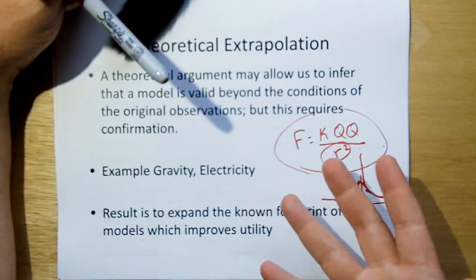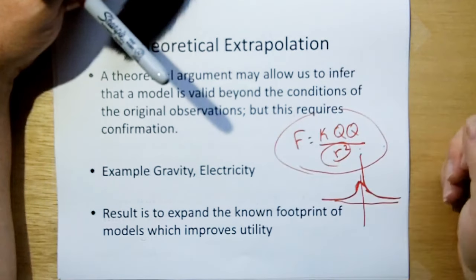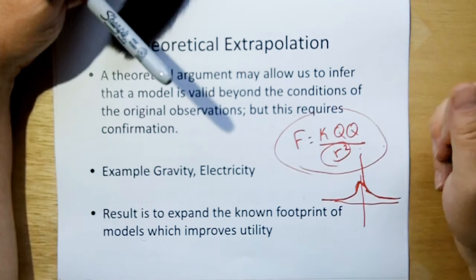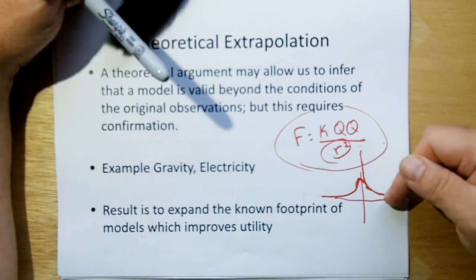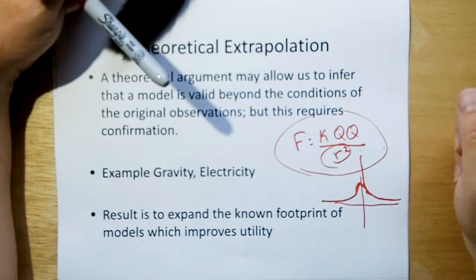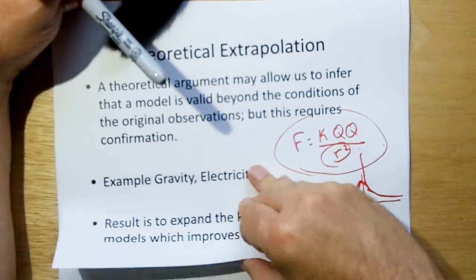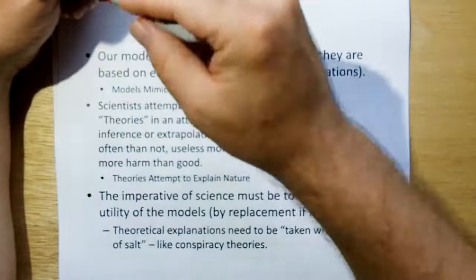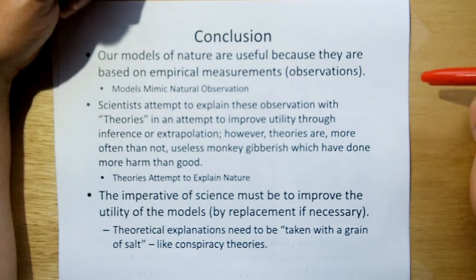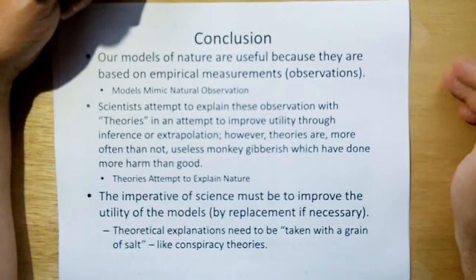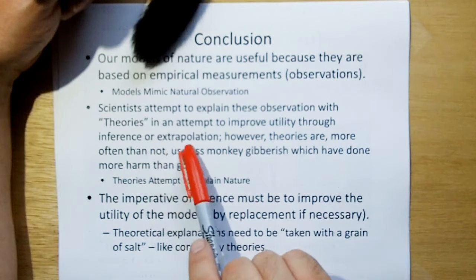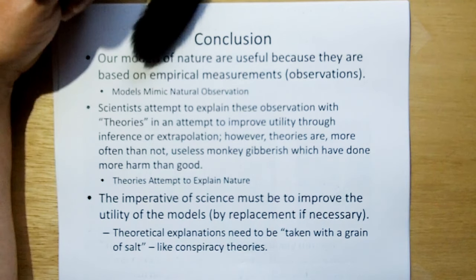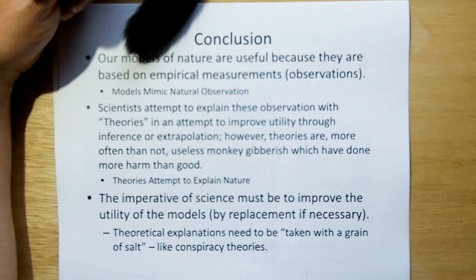So theoretical extrapolation still requires confirmation. Our models in nature are useful because they are based on empirical measurements, also known as observations. And basically, models mimic natural observations. That's what models do. Scientists attempt to explain these observations with theories and attempt to improve utility through inference or extrapolation. However, theories are, more often than not, useless monkey gibberish which have done more harm than good. But essentially, theories are an attempt to explain nature. They're pretty much just guesses.